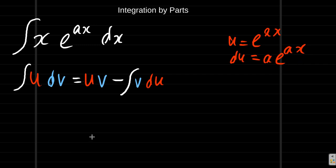And then, if you use x as dv, and you say dv is equal to x, then v, moving from dv to v, you integrate. This would be x squared over 2.